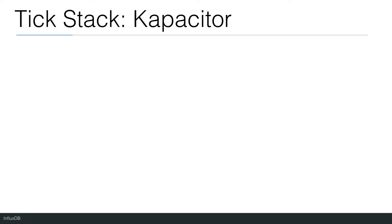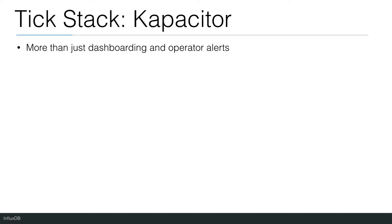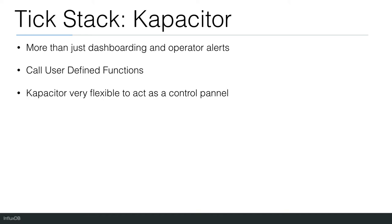Today's modern applications require more than just dashboarding and operator alerts — they need the ability to trigger actions. Kapacitor's alerting system allows you to do this. Alerts are published to a topic and handlers subscribe to a topic. This pub-sub model and the ability to call user-defined functions make Kapacitor very flexible to act as the control plane in your environment. It can perform tasks like autoscaling, stock reordering, and IoT device control.